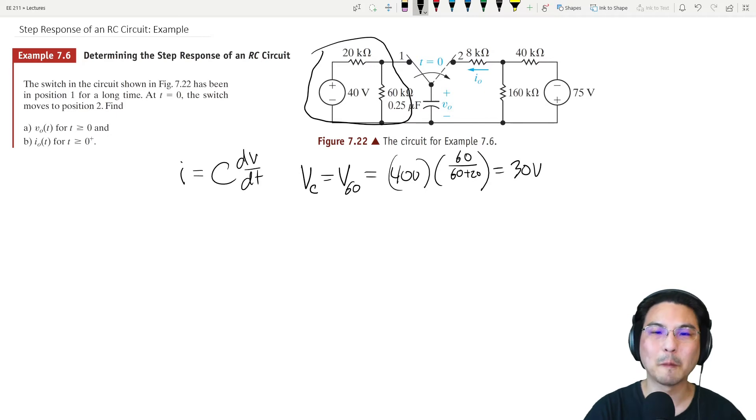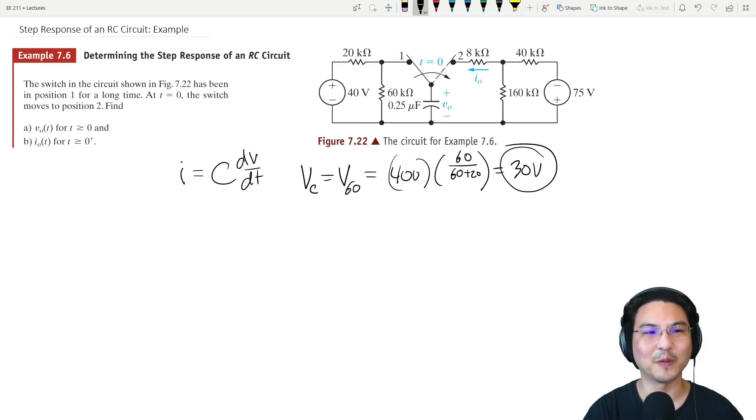When the switch is here, the voltage across the capacitor is 30 volts. The voltage across the capacitor cannot change instantaneously - you would need infinity current for the voltage to change instantaneously.